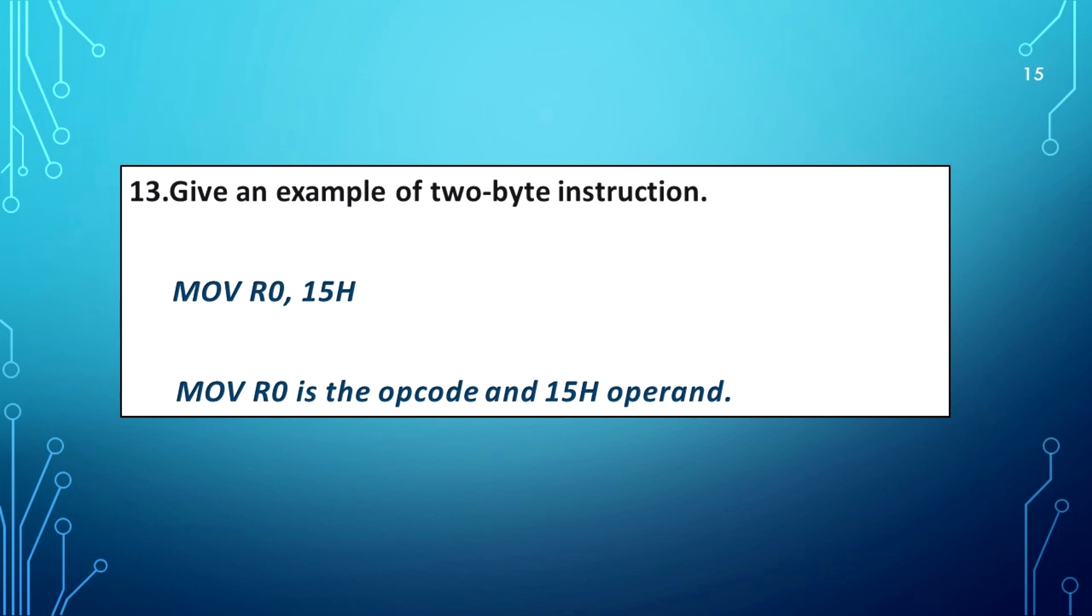An example of two byte instruction is MOV R0, #15H. MOV R0 is the opcode and 15H is the operand.